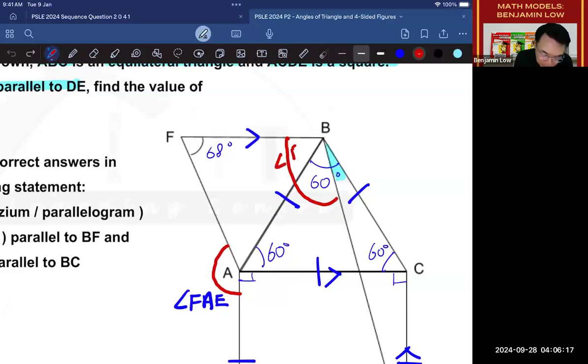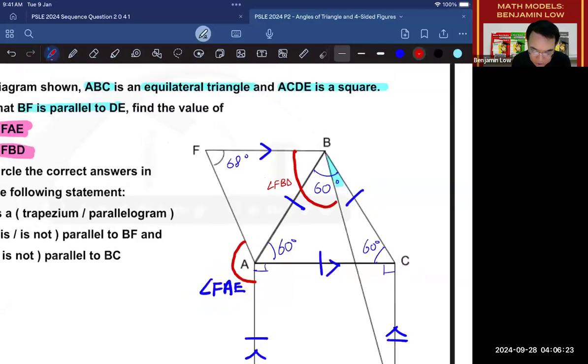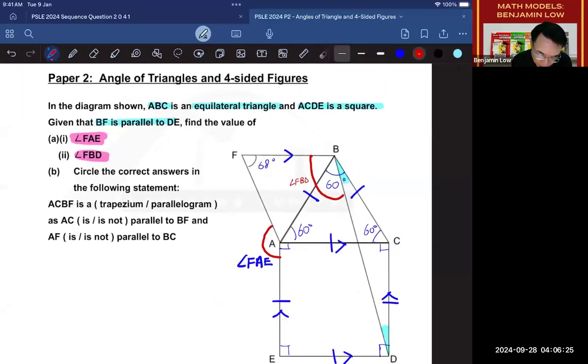Maybe I shouldn't write it there. Let me write it here. Angle F, B, D. Alright, so this real angle. So now we know what we need to find. Okay, let's begin.